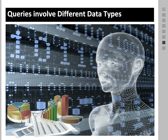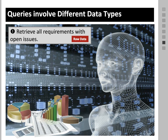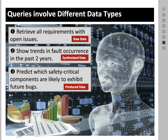Let's look at different kinds of data we might be interested in. The first is basic data retrieval — for example, retrieve all requirements with open issues. Currently this is a problem for some people because they don't have good query mechanisms. Next is synthesized data — taking data that exists in the system and merging and synthesizing it in new ways. Third is actually producing new data: for example, predict which safety-critical components are likely to exhibit future bugs. This falls under the area of software analytics, which we need to support in order to answer analytical queries.